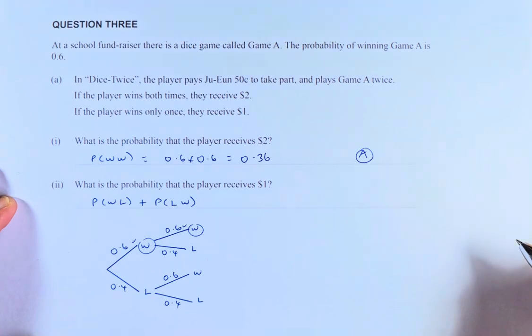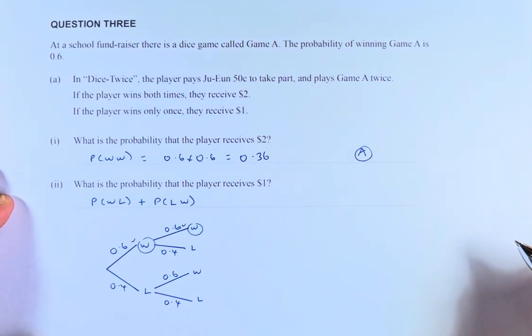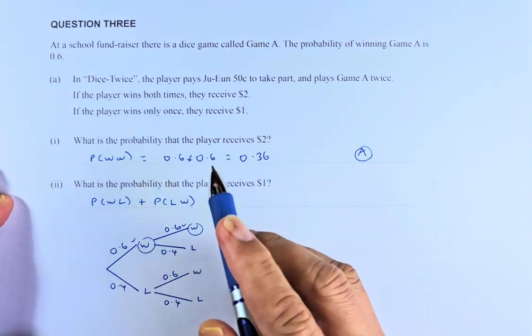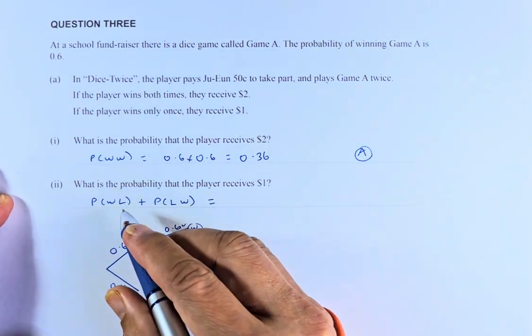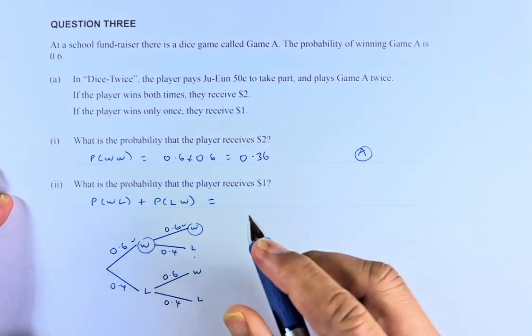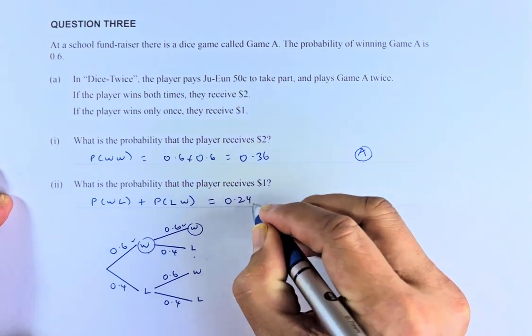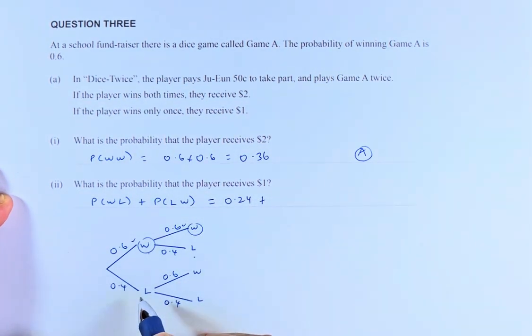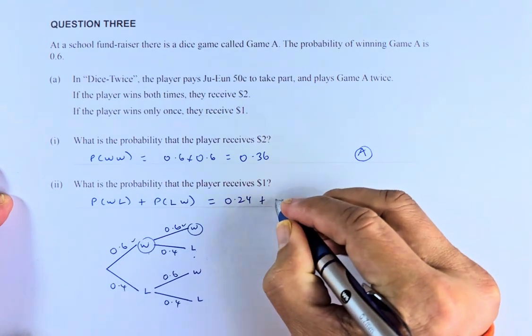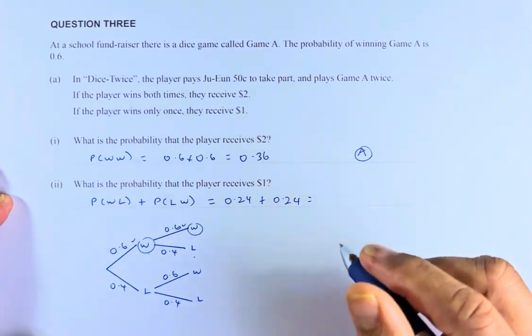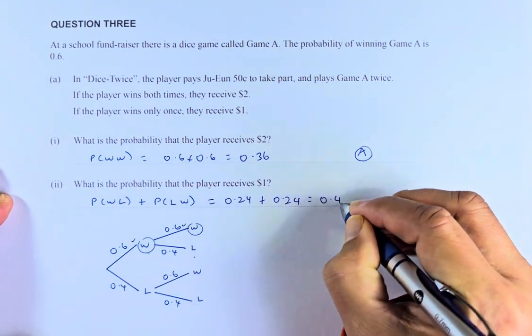Question Part 2. What is the probability that the player will receive $1? To receive $1, he either wins one and loses one. This could be probability of win-loss or probability of loss-win. So, win-loss is 0.6 times 0.4, that gives us 0.24. And the other option is loss-win, 0.4 times 0.6 is also 0.24. And you add them up together, the probability of receive $1 means one win and one loss is 0.48.